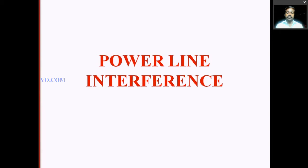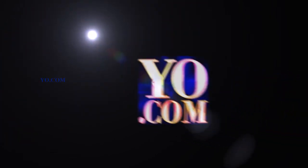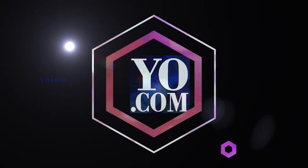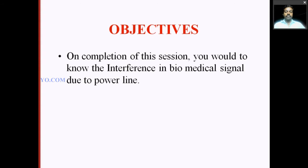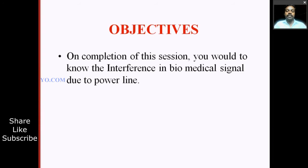In a similar way, power line interference is present. In high voltage, high current power lines, the field affects other weak signals. That is called power line interference. In the last class we studied isolation amplifiers and their types — what is an isolation amplifier, the different types, applications, and advantages. The objective of today's session is mainly to study power line interference.